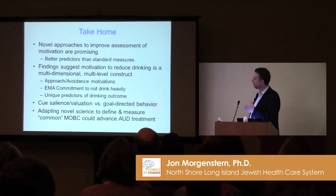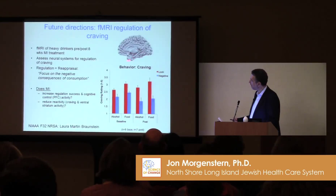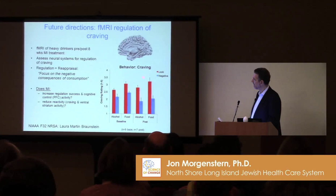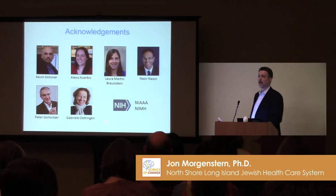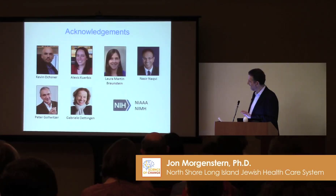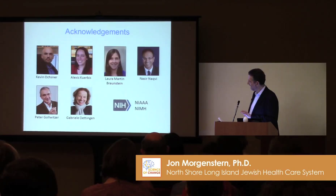As we get neuroimaging into the picture, we'll be able to parse the cognitive processes further. We are working on fMRI — a study being done by Laura Martin on a regulation of craving task — which has some promising results. Hopefully when that study is done we'll be able to say something good. I want to end by acknowledging great collaborators: Kevin Ochsner, Peter Gollwitzer, and Gabriele Oettingen — senior cognitive science and cognitive neuroscience researchers who came on board because of the BAA. It's been phenomenally helpful to have them. And thanks to Alexis Kourbos, Laura Martin, and Nasser Nakfi for doing great work.